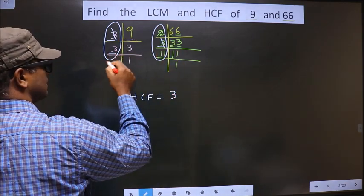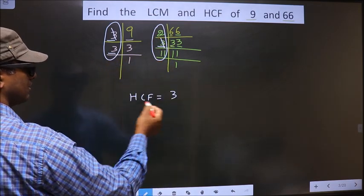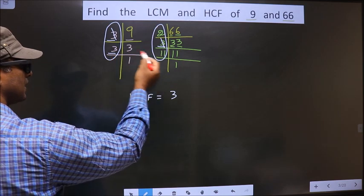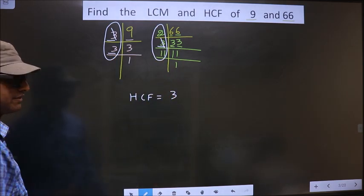Next number is 3. Do we have 3 here? No. No more numbers are left. Only one number was common in these two places. So this is our HCF.